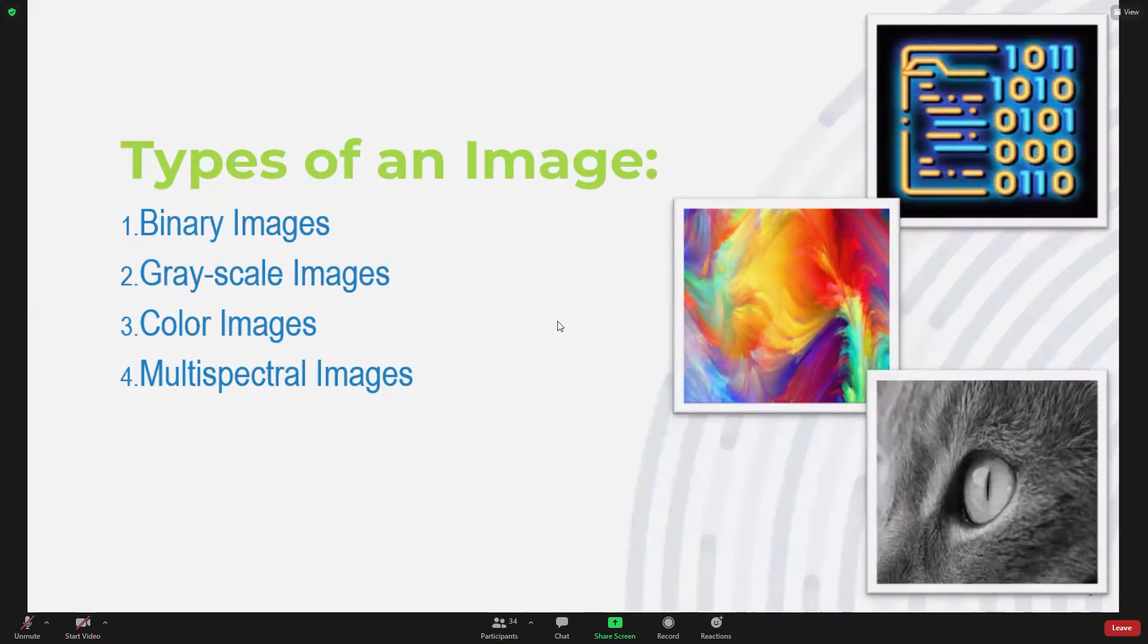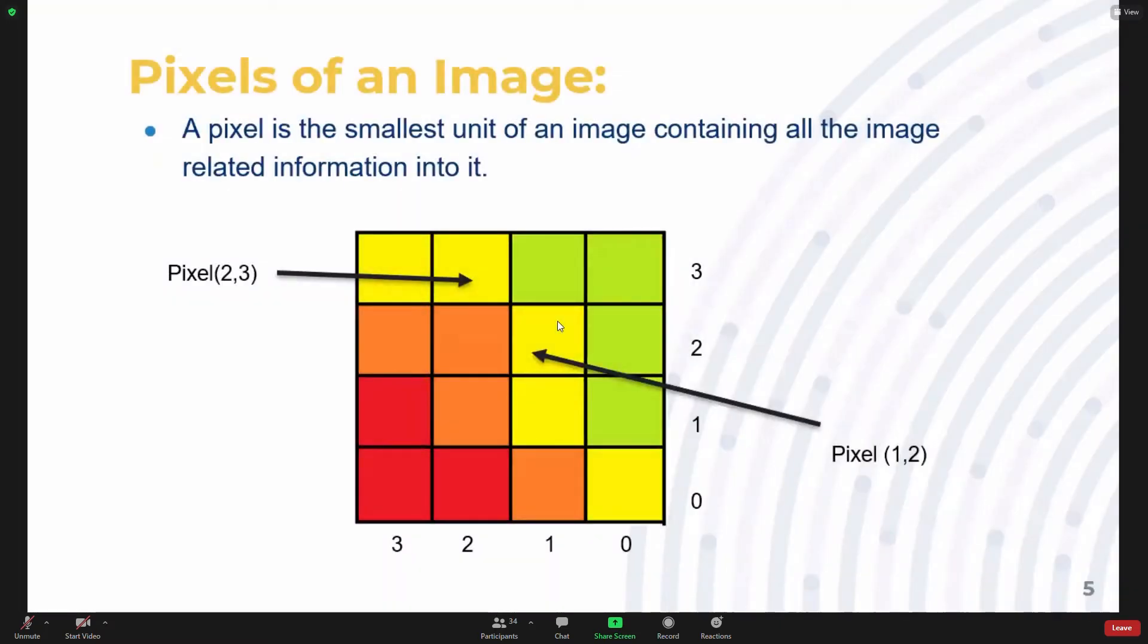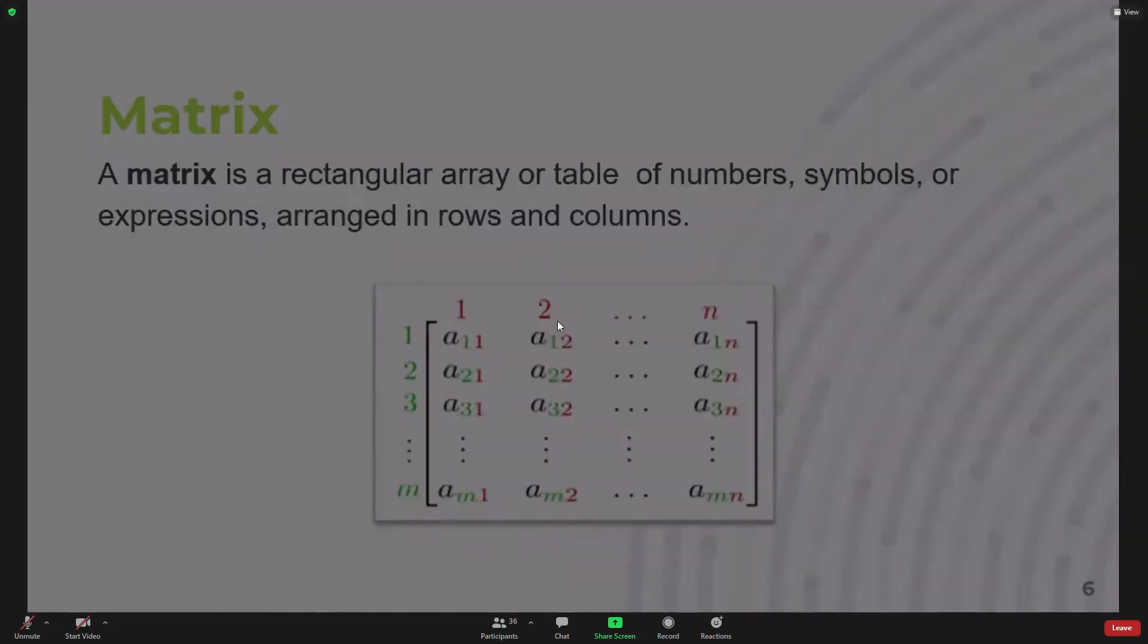Each image consists of pixels. A pixel is the smallest unit of an image containing all the image-related information. A pixel usually contains information like intensity of light and prominence of light. Now we have learned about image and pixel, so let us move toward the mathematical concept to be used in this presentation.